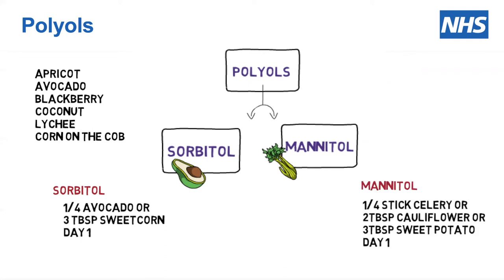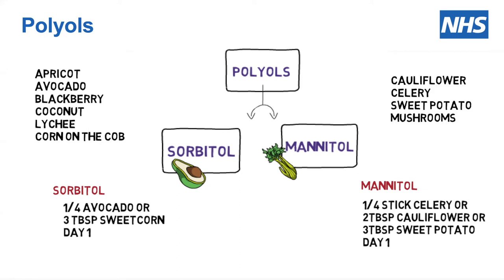Mannitol is one of the other polyols. We generally suggest you use celery, cauliflower, or sweet potato to do the test. With celery: a quarter of a celery stick on day one, half a celery stick on day two, and three quarters of a celery stick on day three. The same principle applies if you use cauliflower or sweet potato. Mushrooms are another food in the mannitol group. Use the same food for each of the three-day challenges.